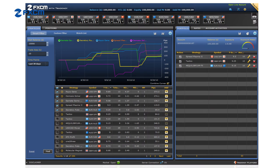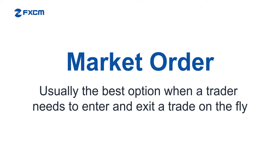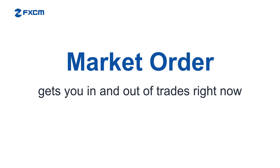The most common order type is the market order. This order is usually the best option when a trader needs to enter or exit a trade on the fly. Market orders get you in and out of trades right now, at the current market price.